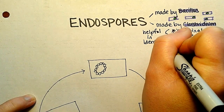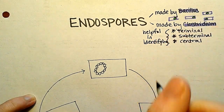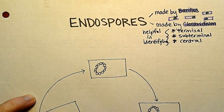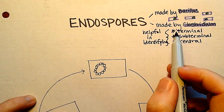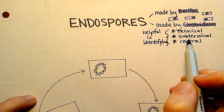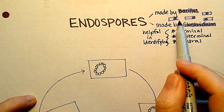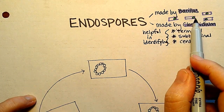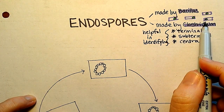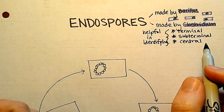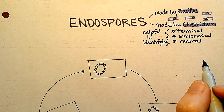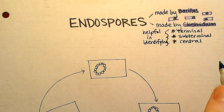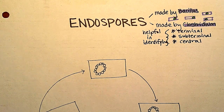So you might have narrowed it down — you know this is Clostridium or this is Bacillus — and then when it starts to sporulate you see where the spores formed, and that helps you say it's Bacillus subtilis or Bacillus cereus, etc. So this can be helpful in identification.